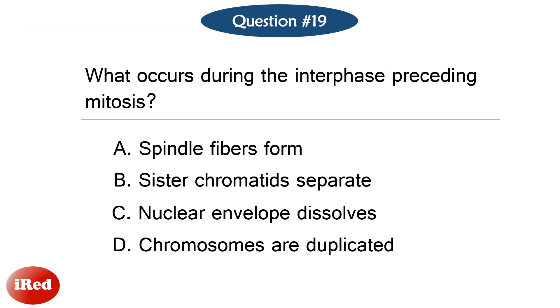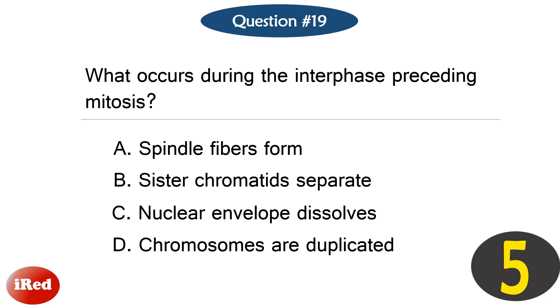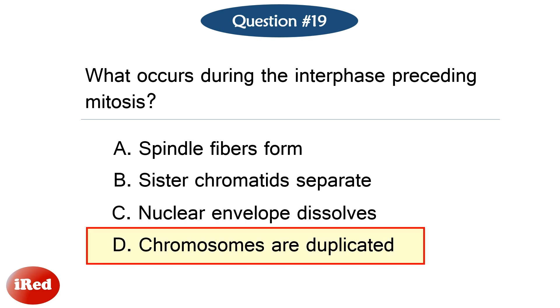Question number nineteen. What occurs during the interphase preceding mitosis? The correct answer is letter D: chromosomes are duplicated.